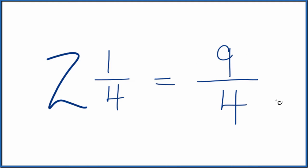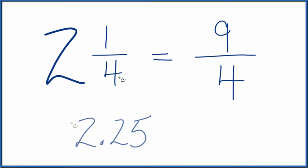Note that these are the same value. If you take and convert two and one-fourths to a decimal, you get 2.25. If you divide nine by four, you get 2.25. So they're equivalent in terms of their value. It's just that we've represented them differently here.